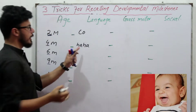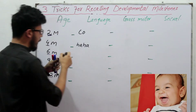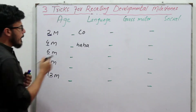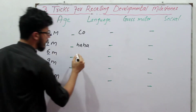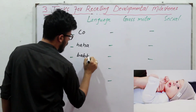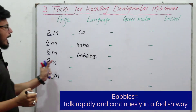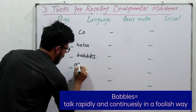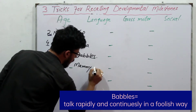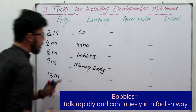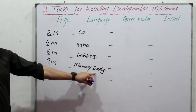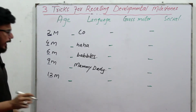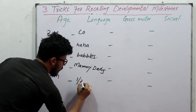At four months the baby laughs — 'haha' — which consists of four alphabets. At six months there is babbling. At nine months, a normal child can say 'mommy' and 'daddy,' which consists of nine alphabets. At twelve months, a normal child can say one or two words.